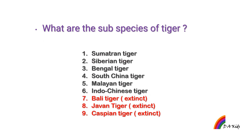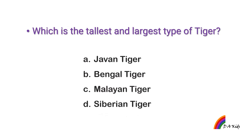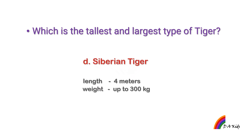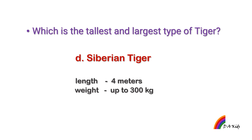What are the subspecies of tiger? Sumatran tiger, Siberian tiger, Bengal tiger, South China tiger, Malayan tiger, and Indo-Chinese tiger. Extinct subspecies: Bali tiger, Javan tiger, and Caspian tiger. Which is the tallest and largest type of tiger? Siberian tiger — length 4 meters, weight up to 300 kilograms.